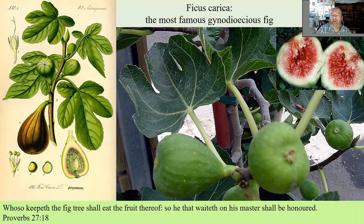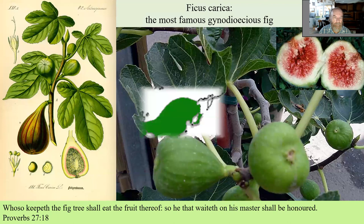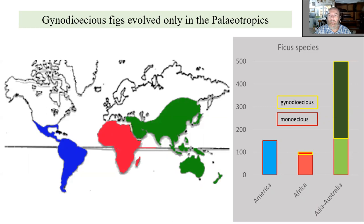The most famous gynodioecious fig is ficus carica — the edible one. That means we are eating the seed figs, with only one or very few dead fig wasps inside each one — they entered, tried to oviposit, pollinated everything, and then died. Gynodioecious figs evolved only in the Paleotropics, so neotropical figs simply don't have this innovation.